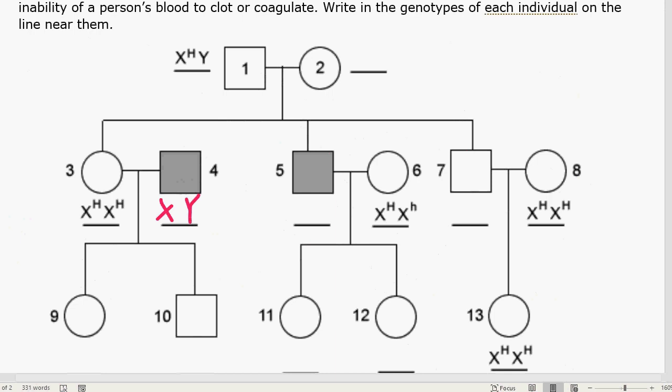Since the male has hemophilia, is indicated by the fact that he is shaded in, there must be a lowercase letter H on his X chromosome. So this male is X lowercase h, Y.